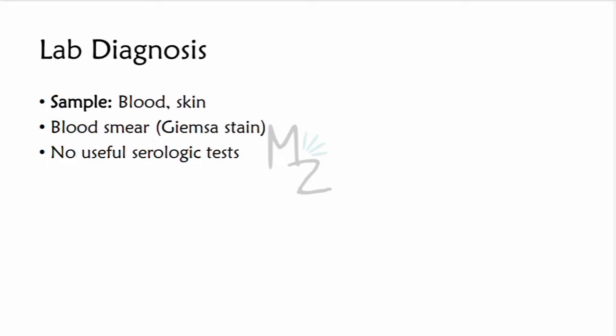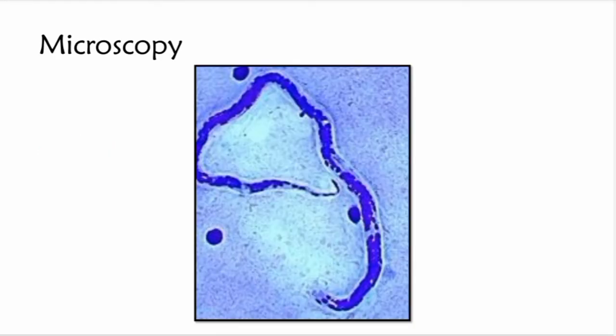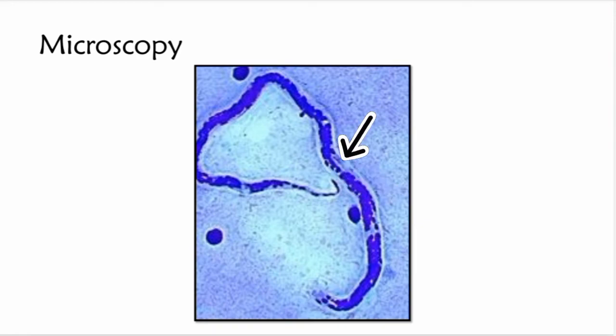For lab diagnosis, samples of blood and skin are needed, and sometimes sputum and spinal fluid. Diagnosis is made by visualization of the microfilariae in a blood smear. There is no useful serologic test available for diagnosing Loiasis. On a blood smear, you can identify the Loa Loa worm by its head, body, and blunt tail with nuclei inside and a cuticle around it.